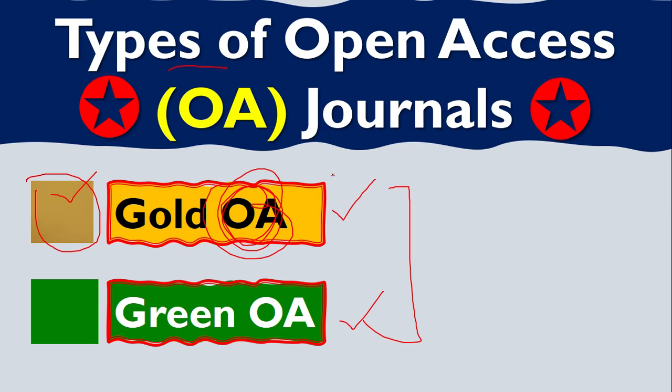Open access journals are those journals which make or provide their contents free of cost for anybody. If I want to read or download any research article from this journal, it is free. Anybody can download hundreds of thousands of research articles from an open access journal. It is free for every reader — anybody who wants to download or read online, it is free.